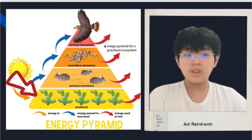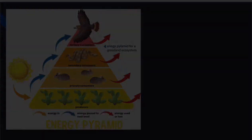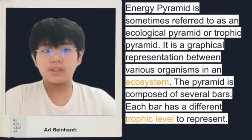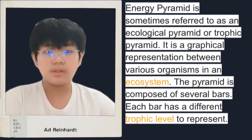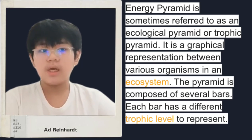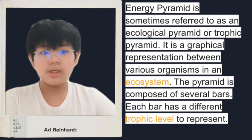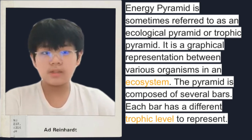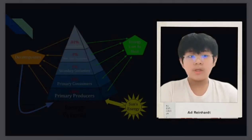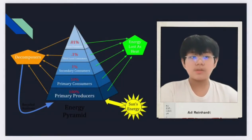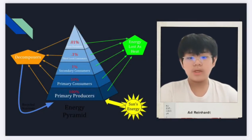The bottom and the largest part of the pyramid are the producers that contain the largest amount of energy. The energy pyramid is sometimes referred to as an ecological pyramid or trophic pyramid. It is a graphical representation of the relationships between the various organisms in an ecosystem. The pyramid is composed of several bars, and each bar represents a different trophic level. The order of these bars is based on who feeds on whom, and it represents the energy flow in the ecosystem.